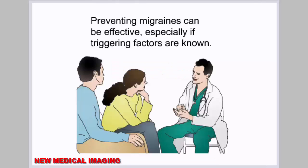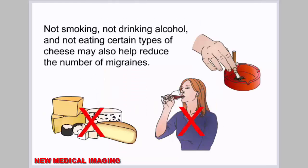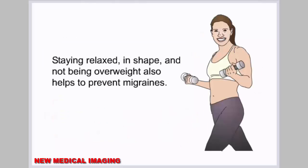Preventing migraines can be effective, especially if triggering factors are known. Not smoking, not drinking alcohol, and not eating certain types of cheese may also help reduce the number of migraines. Staying relaxed, in shape, and not being overweight also helps to prevent migraines.